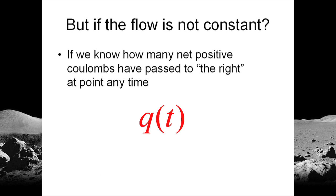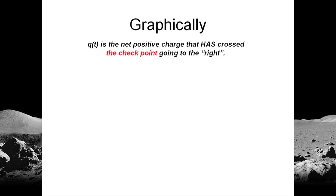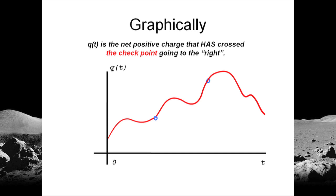We can represent that function of time as a graphic, like this, q as a function of t. That curve, being the net positive charge that has crossed the checkpoint going to the right at any point in time, tells us things like this.